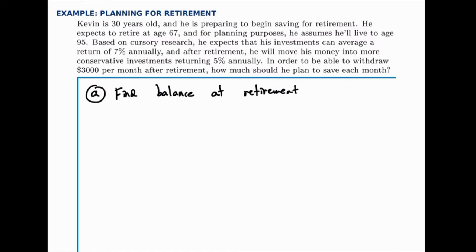And we can figure out, based on a payout annuity formula, how much he needs to have in his account at the moment of retirement. Then in the second part, we'll find how much he needs to start saving, what that payment needs to be in order to reach the balance that he needs at the moment of retirement.